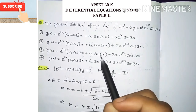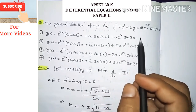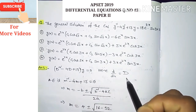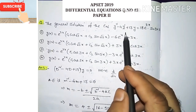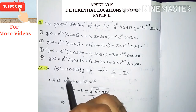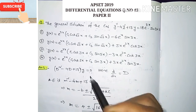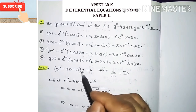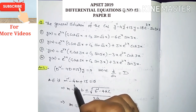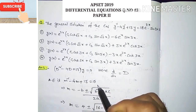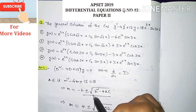Coming to the solution — the given equation in operator form can be written as (D² - 4D + 13)y = 0, where D = d/dx is the differential operator. The corresponding auxiliary equation is m² - 4m + 13 = 0.